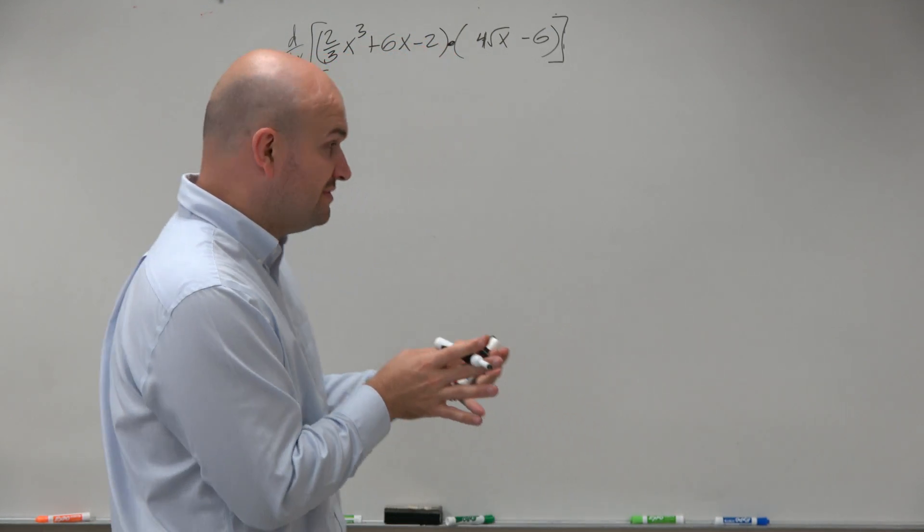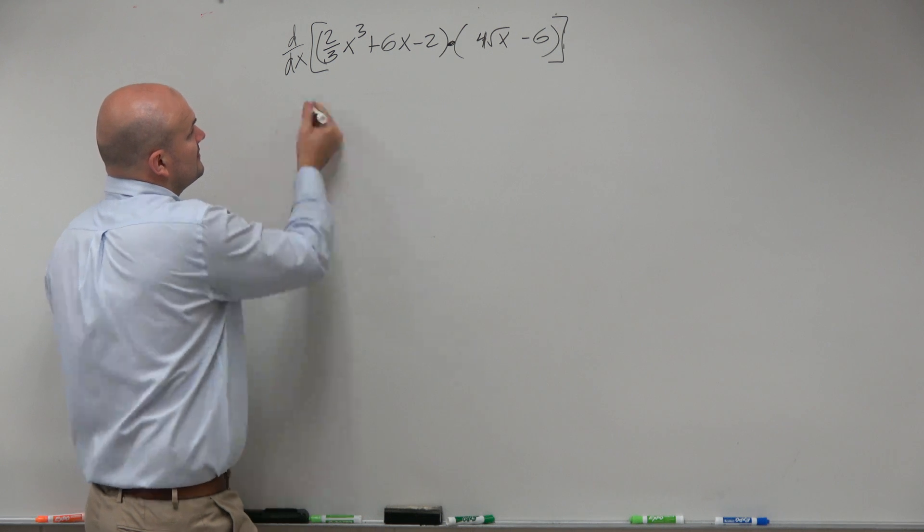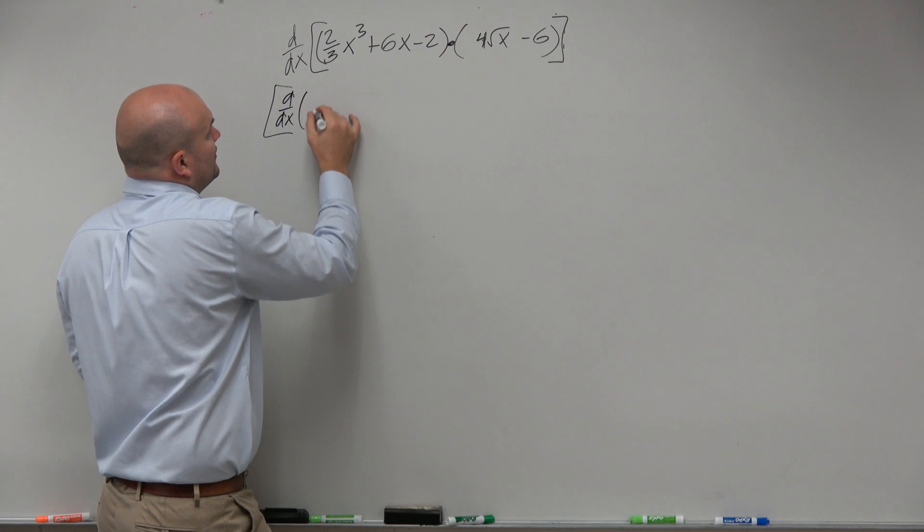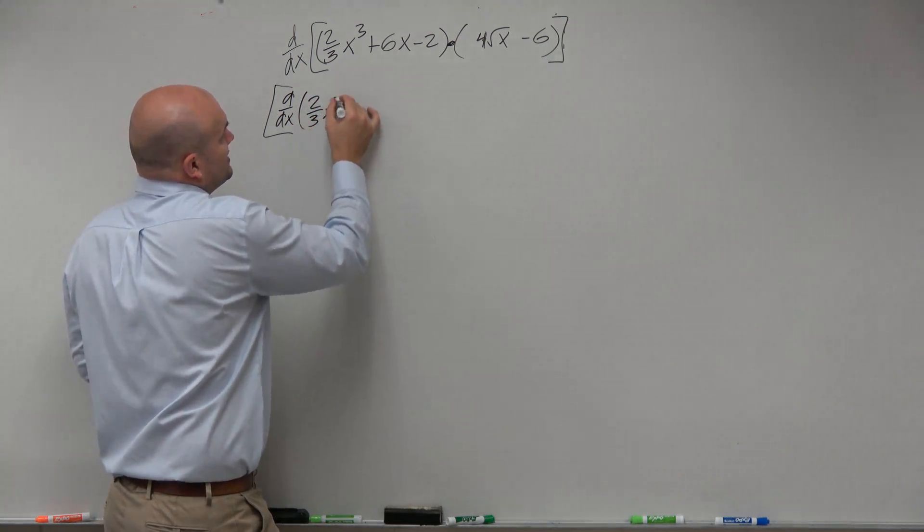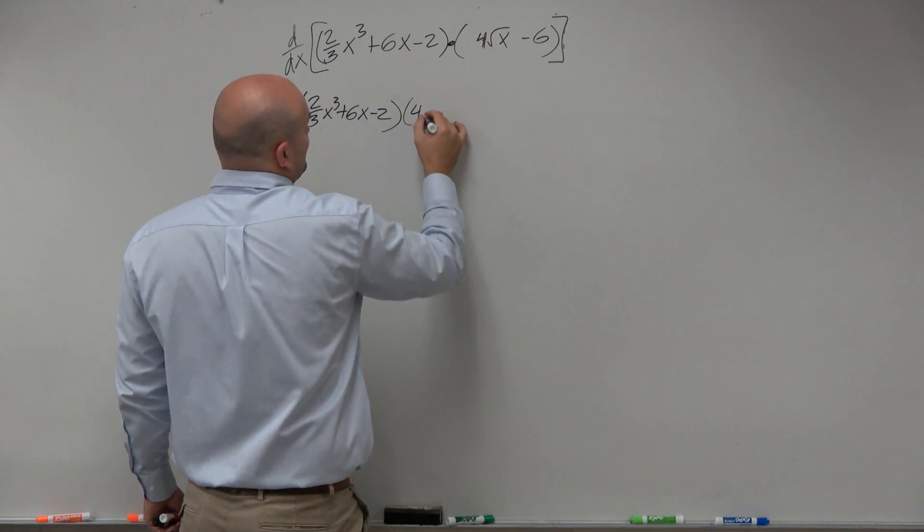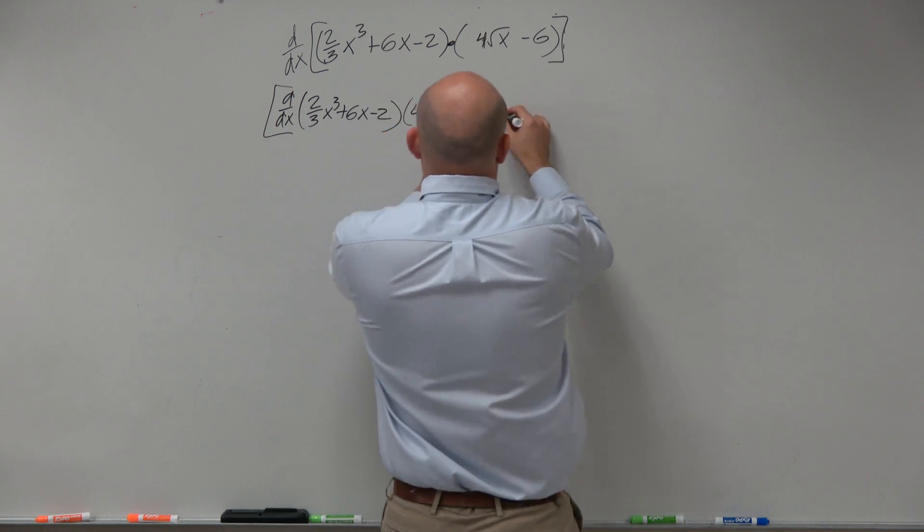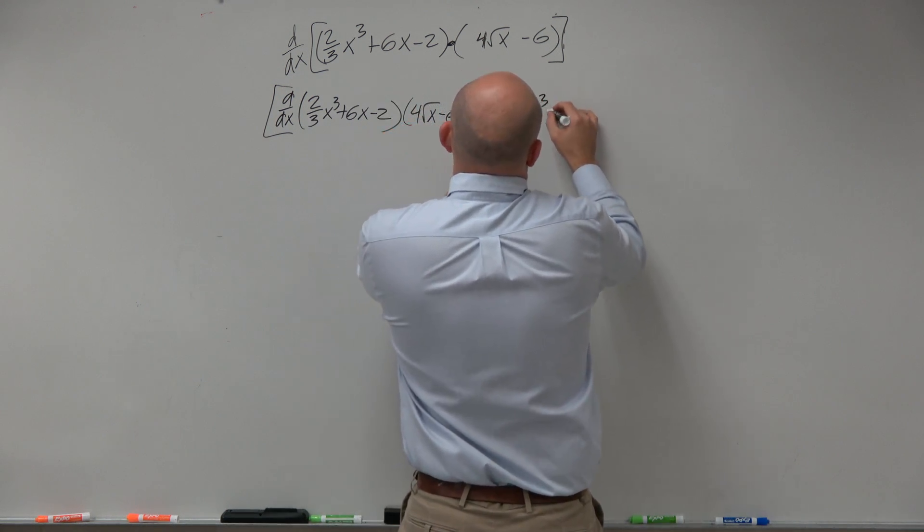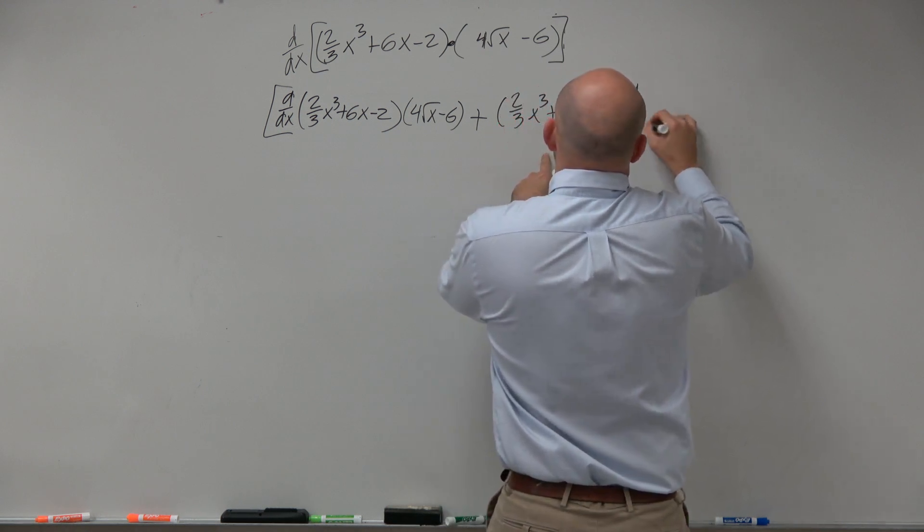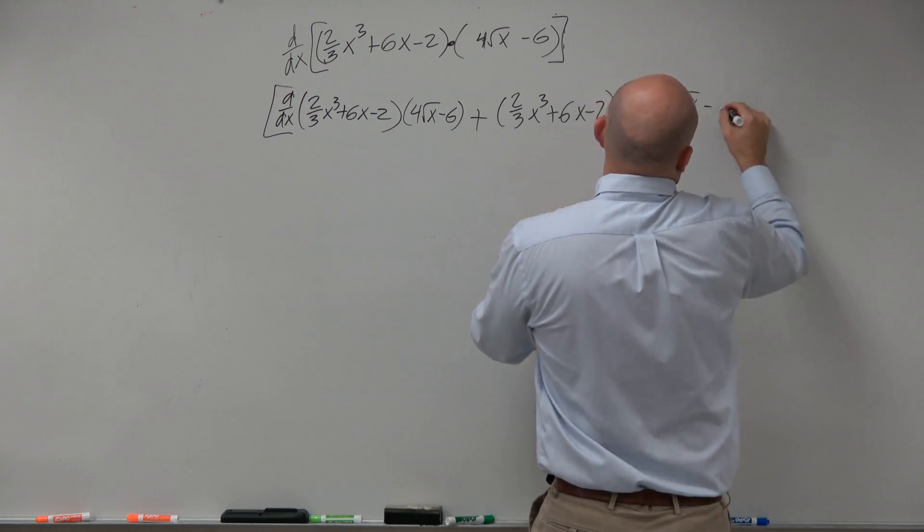So therefore, it's basically we're going to have dy/dx of (2/3)x³ + 6x - 2 times 4√x - 6, plus the first term (2/3)x³ + 6x - 2 times d/dx of 4√x - 6.